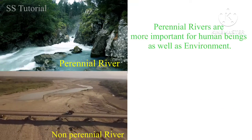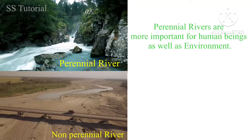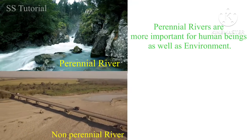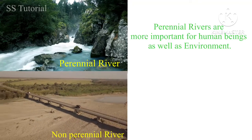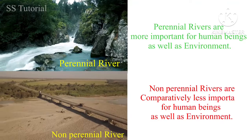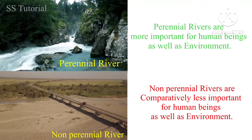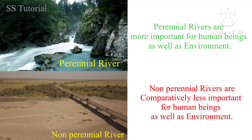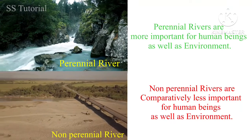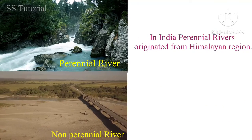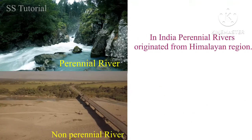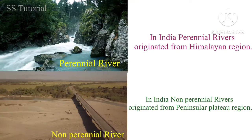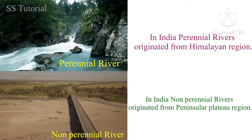As water is available throughout the year in perennial rivers, they are more important for human beings as well as the environment. But as water is not available throughout the year in non-perennial rivers, they are less important for man and environment. In India, perennial rivers originate from the Himalayan region, but non-perennial rivers originate from the peninsular plateau.